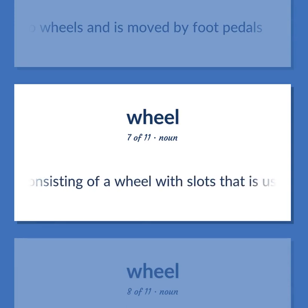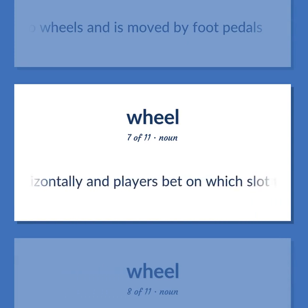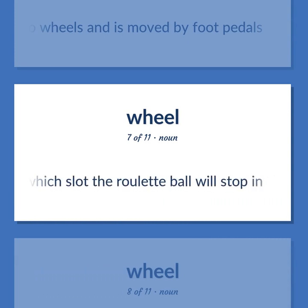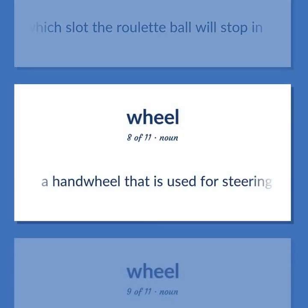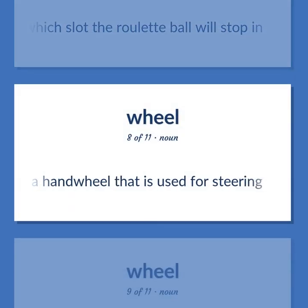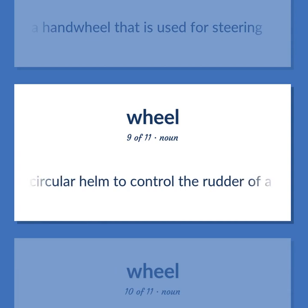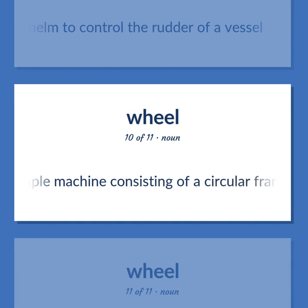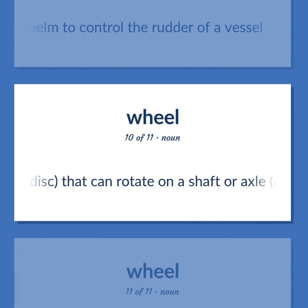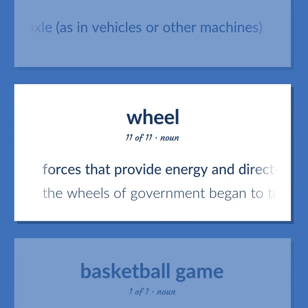WHEEL (continued): Game equipment consisting of a wheel with slots that is used for gambling; the wheel rotates horizontally and players bet on which slot the roulette ball will stop in. A handwheel that is used for steering. A circular helm to control the rudder of a vessel. A simple machine consisting of a circular frame with spokes, or a solid disk, that can rotate on a shaft or axle, as in vehicles or other machines. Forces that provide energy and direction — 'the wheels of government began to turn.'